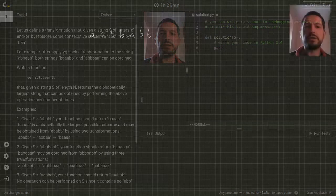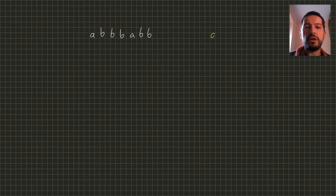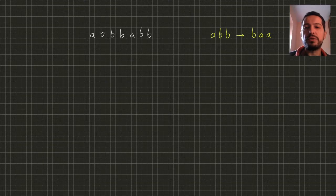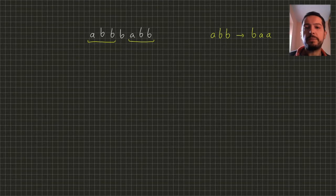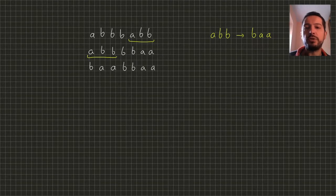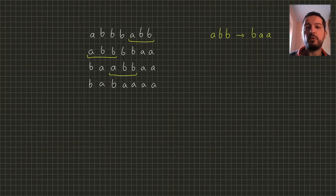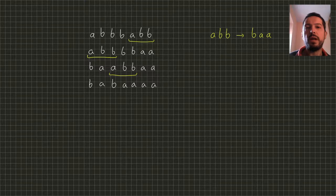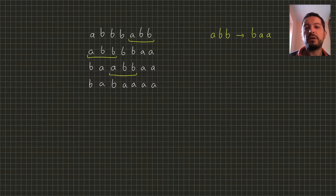Let's analyze one of the example test cases. The transformation we can apply is changing an occurrence of subword ABB into subword BAA. In our example word we have two occurrences of ABB, so if we want to apply some transformation we can choose which occurrence to replace. If we choose to replace the second one we get a word in which we can still replace the first one. After performing this transformation we see we can do another one because ABB appears one more time. Finally we get a word in which ABB does not appear anymore. It turns out this word is the alphabetically largest possible word, so we can return it as the answer.